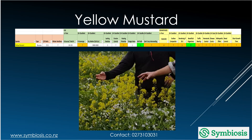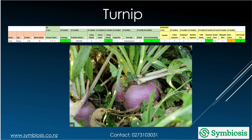Yellow mustard is good at scavenging nitrogen, not a bad soil builder, and great for beneficial organisms, soil compaction, and allelopathic effect. Turnip is good at scavenging nitrogen, and it has some nitrogen-fixing ability as well as grazing potential.